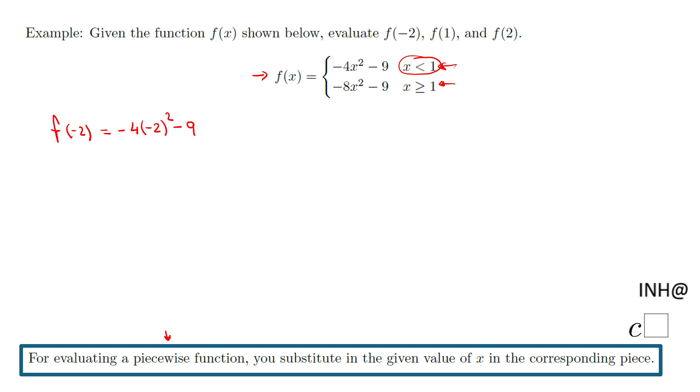Minus 9. So that's the thing, the key thing when you want to evaluate the piecewise function. And now let's evaluate this: negative 4 times negative 2 to the second power, that is 4 times 4 minus 9. That will be negative 16 minus 9, that will be negative 25.